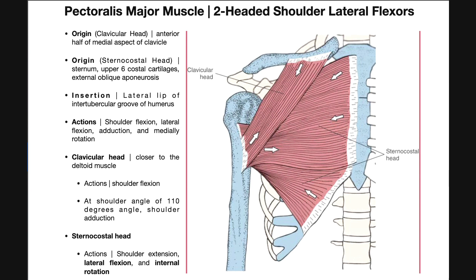So the actions of pectoralis major: lateral flexion is really the major function. When you're performing a bench press or pectoral flies with dumbbells or a machine, you're performing lateral flexion, which is why they're good exercises to stress the pectoralis major. In general the actions are shoulder flexion, shoulder lateral flexion, a little bit of adduction, and then it's going to facilitate medial rotation.